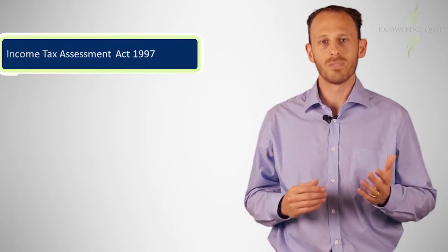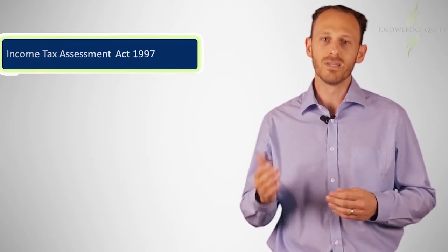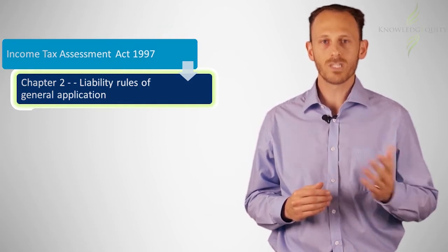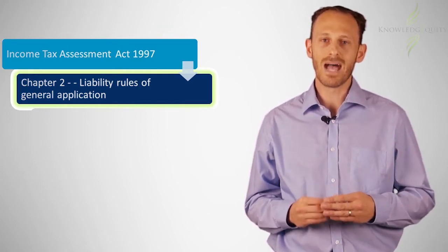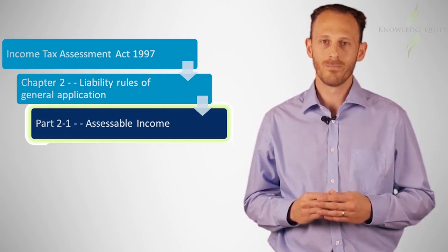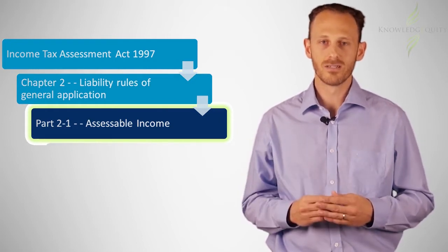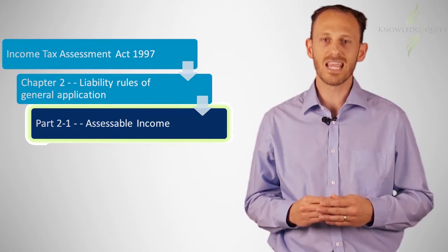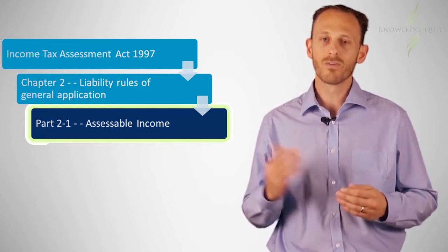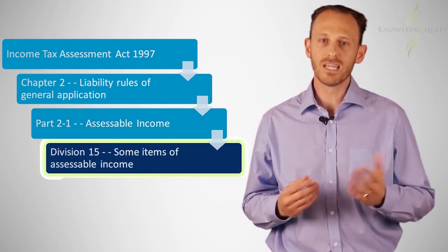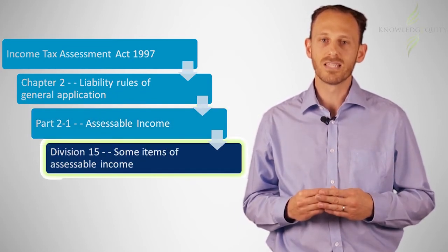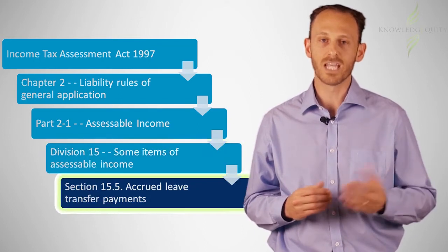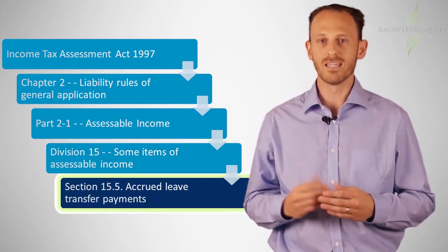Each chapter will have several parts, and these will be numbered starting with the chapter number. For instance, the first part of chapter 2 will be part 2-1. Parts will have divisions. A particular division's number will correspond to the sections in that division. For instance, division 15 will have all sections starting with section 15 in it, such as section 15-5 and section 15-20.